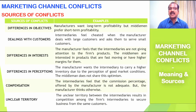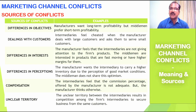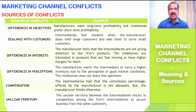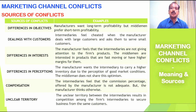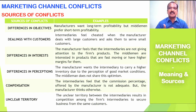Let us look at the sources of conflicts and their examples. The first source is differences in objectives. Manufacturers want long-term profitability, but middlemen prefer short-term profitability. Companies look for long-term profitability through a product or brand, whereas intermediaries lack that tolerance and seek short-term profitability through the products they deal with.